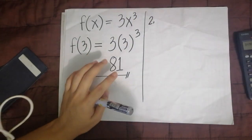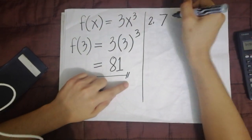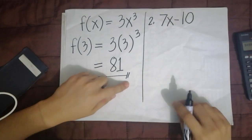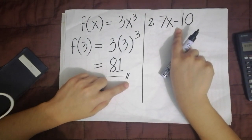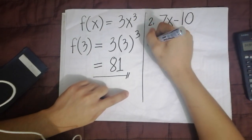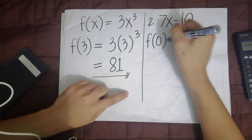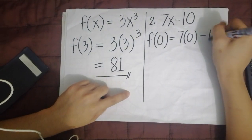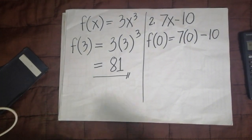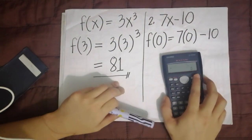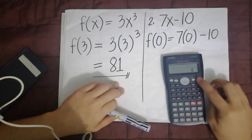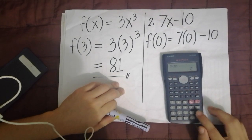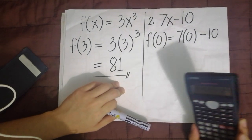So let's solve it. The expression is 7x minus 10. We substitute x with 0: 7 times (0) minus 10. You can press this directly on the calculator — what you see is what you press. So: 7, parenthesis, 0, close parenthesis, minus 10. The answer is negative 10.